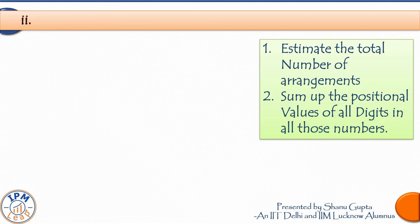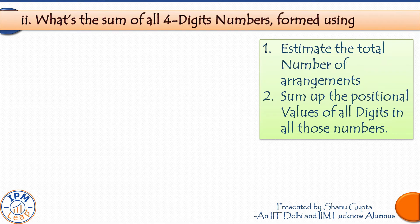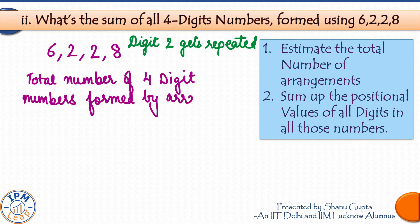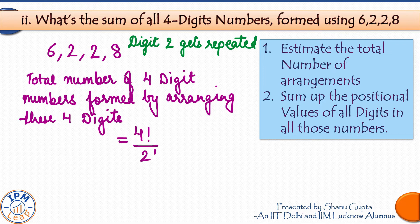Coming to our next case — this is a bit tricky because digit 2 gets repeated. So even though our approach is the same, the calculations will be different, and we can't use the general formula here. The first step is to estimate the total number of 4-digit numbers that can be formed. These 4 digits can be arranged in 4! ÷ 2! ways, dividing by 2! because digit 2 repeats twice. This gives us 12 numbers.